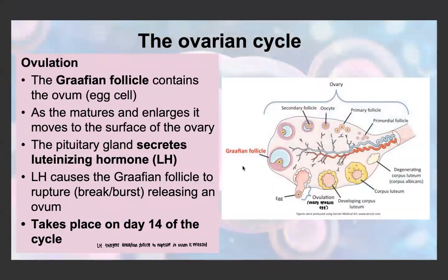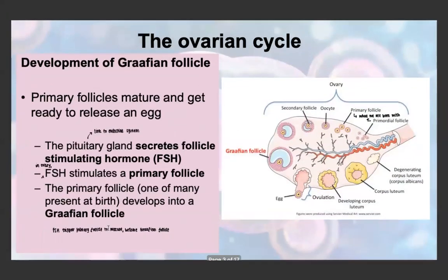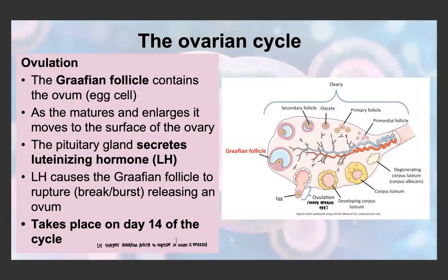Ovulation usually happens around day 14 of the cycle. The Graafian follicle contains one ovum. As the Graafian follicle matures and enlarges it moves towards the surface of the ovary. The pituitary gland then secretes another hormone — luteinizing hormone, or LH. LH causes the Graafian follicle to rupture and release the ovum on day 14. So FSH triggers the primary follicle to mature into a Graafian follicle, and LH triggers the Graafian follicle to rupture and release an egg.